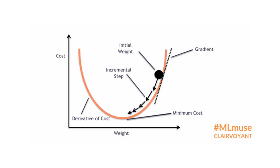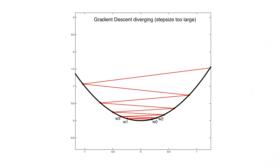Think of gradient descent like a U-shape with a ball in it. The goal is to find the fastest way to get from the largest amount of loss — the lowest accuracy — and minimize it to reach the highest accuracy by adjusting the weights. But if we adjust the weights by too much or too little, we won't get to our destination the way we want to. So we need to move in small steps.